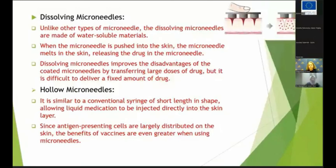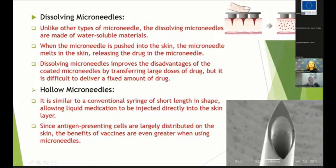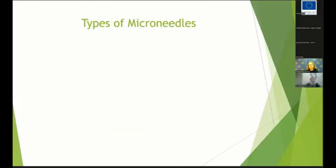The next one is the dissolving microneedle. Unlike other types, dissolving microneedles are made of water-soluble material. When the microneedle is pushed into the skin, it melts in the skin, releasing the drug. These are the dissolving microneedles and they are very effective. What about hollow microneedles? These are hollow microneedles, and I am working on the fabrication of this type. It is very similar to a conventional syringe of short length in shape, allowing liquid medication to be injected directly into the skin layer. Since the antigen-presenting cells are largely distributed in the skin, the benefits of vaccines are ever greater when using microneedles.